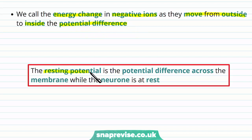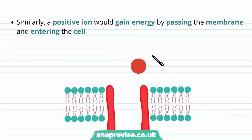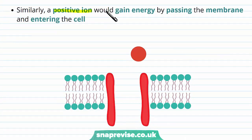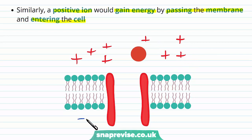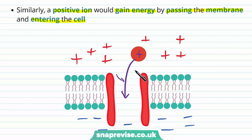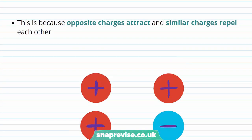By definition, the resting potential is the potential difference across the membrane while the neuron is at rest — that difference in electrical potential. On the other hand, if we took a positive ion and put it through the membrane, it would gain energy passing into the cell, because outside has many positive charges compared to the mostly negative inside. So a positive ion wants to go through — it would gain energy going down its gradient. Positives want to go where there are fewer of them, and negatives want to go where there are fewer of them too, very similarly to diffusion. The important rule: opposite charges attract, and similar charges repel each other.